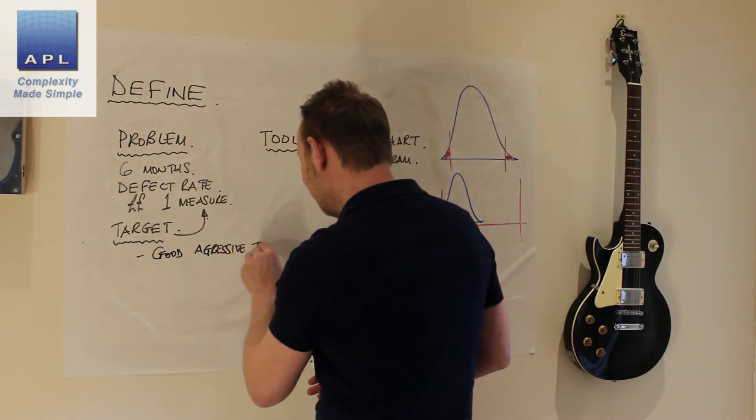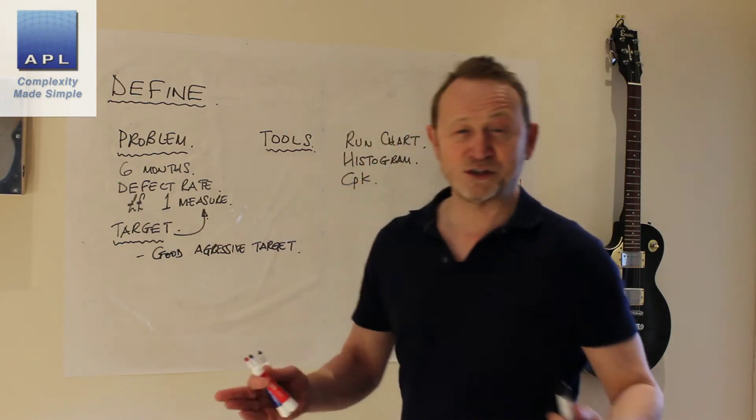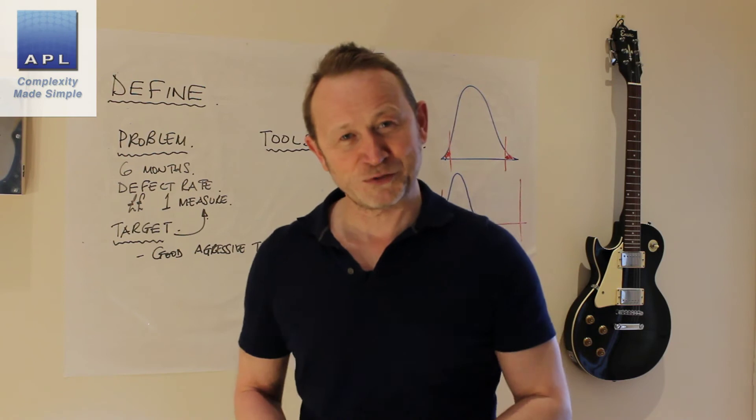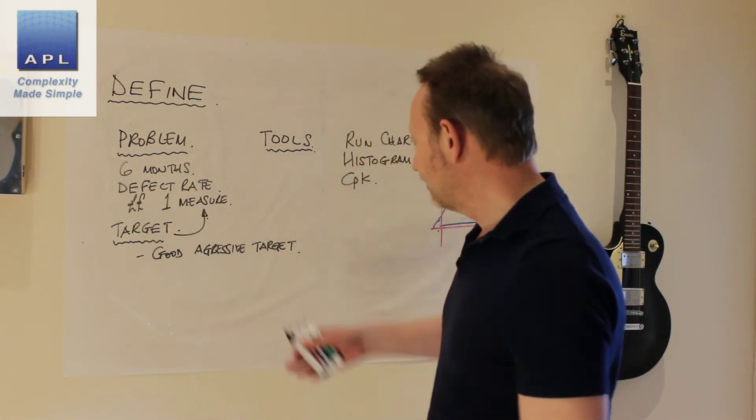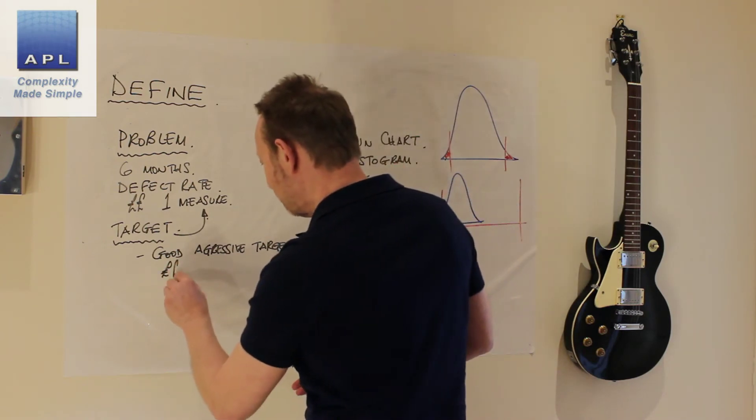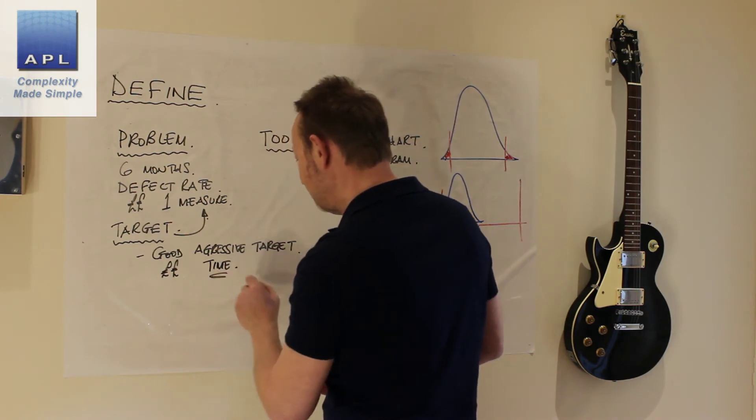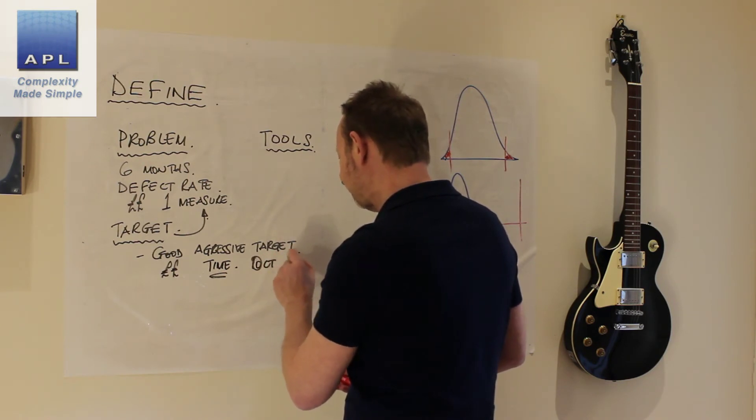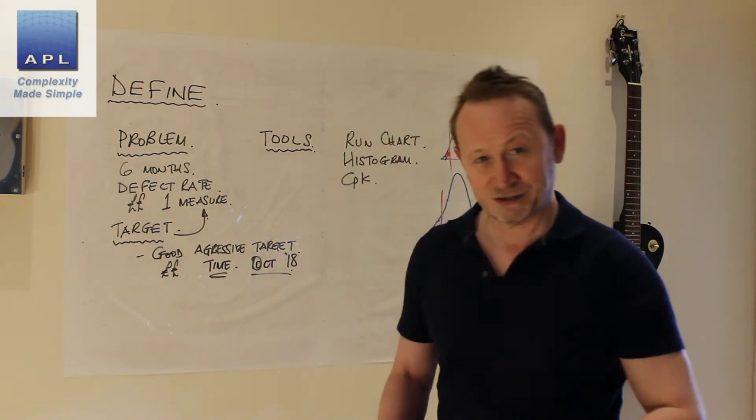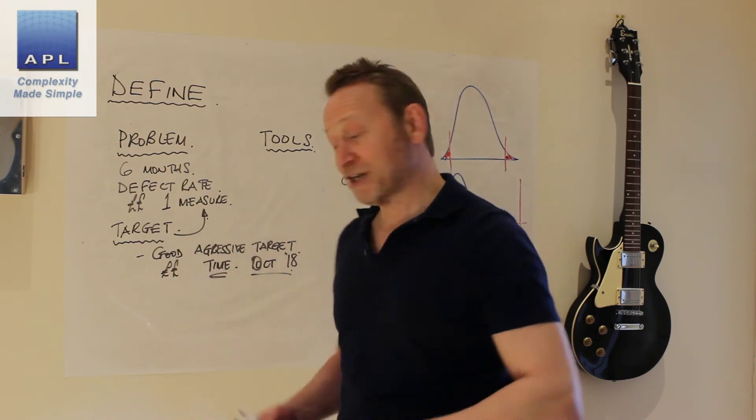A good aggressive target. I don't know, knocking 90% off the defect rate, knocking 99% off the defect rate. Set yourself a challenge. You want to talk about how much money you're going to save and maybe you want to save time.